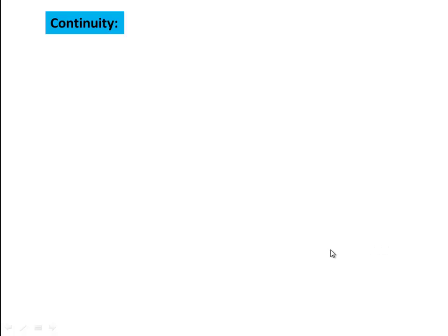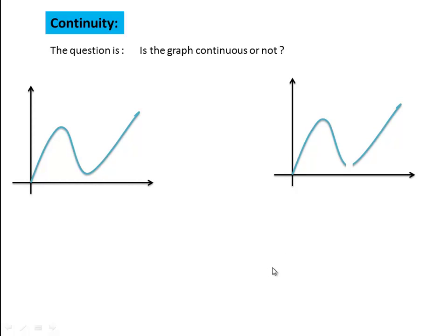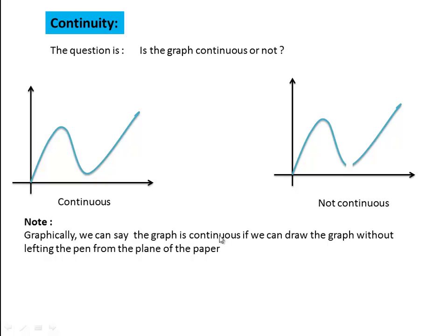The next topic is continuity. The question is: is the graph continuous or not? Looking at two graphs — the one on the left is continuous, and the one on the right is not continuous because we see a break in it. Graphically, a graph is continuous if we can draw it without lifting the pen from the plane. If we lift the pen at any point, the function is not continuous at that point.